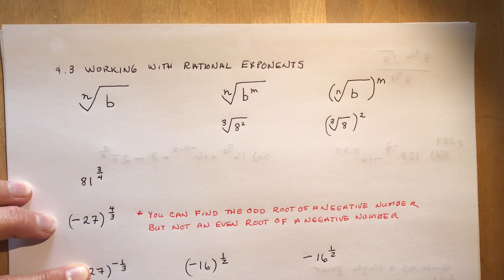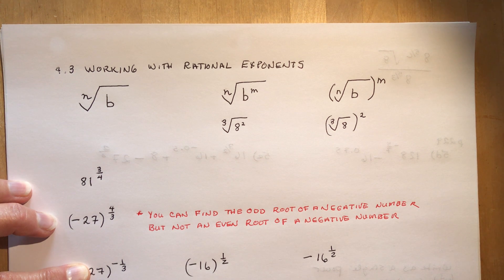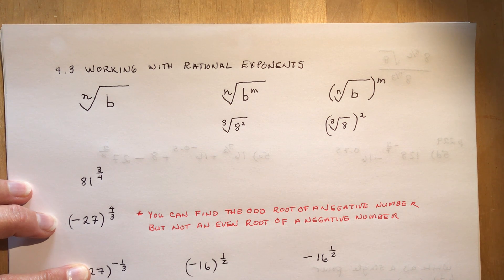Lesson 4.3: Working with rational exponents. When we talk about a rational exponent, we're talking about an exponent that is a rational number — that means a fraction. You should be pretty familiar with working with fractions by the time you get to Grade 11, although some students still have issues with them.